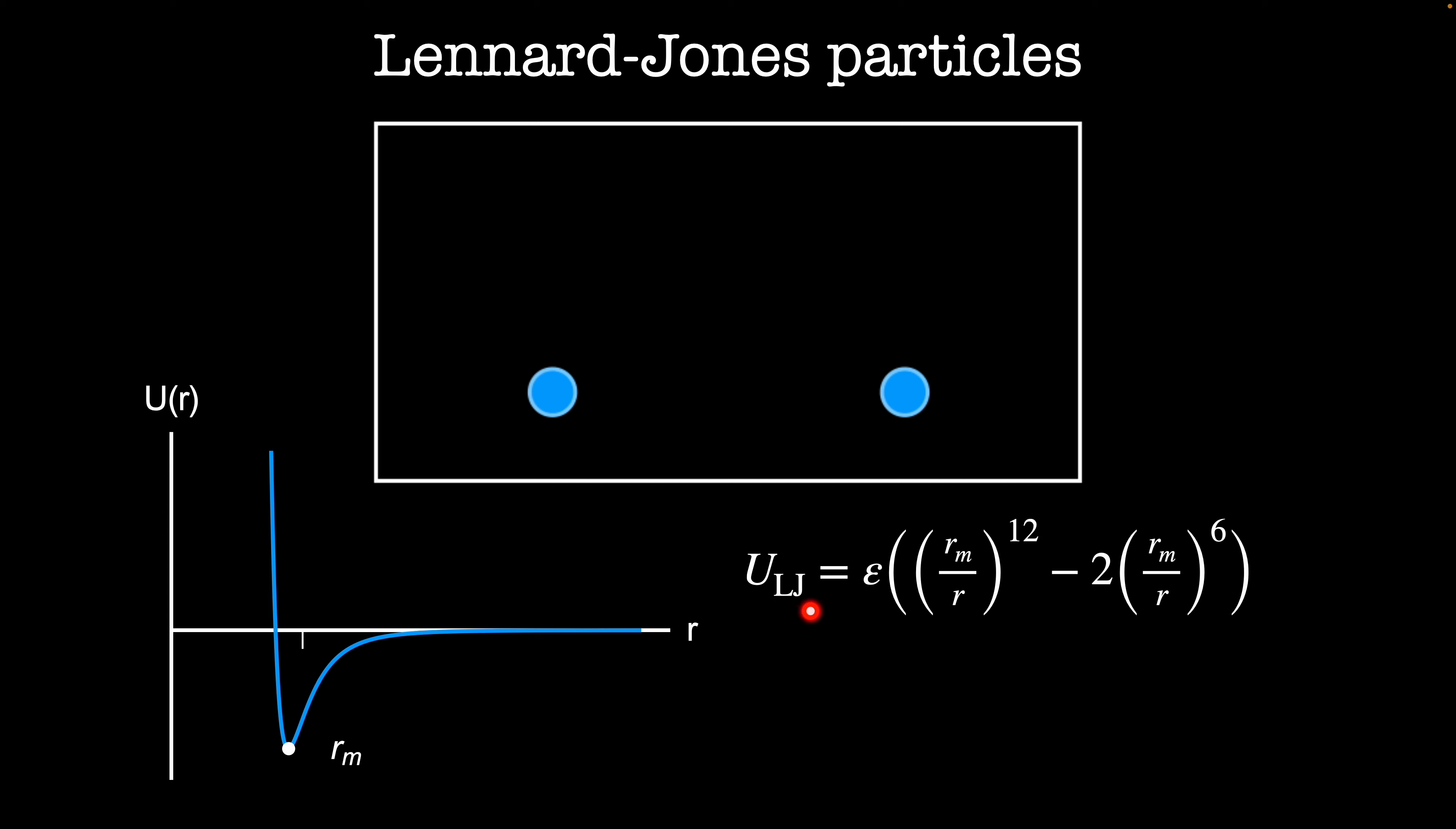We can calculate the force coming from this potential by taking minus its gradient. Here, we've aligned the center-to-center vector between two particles along the x-axis. In the x-direction,